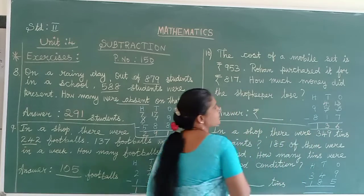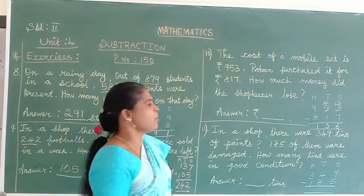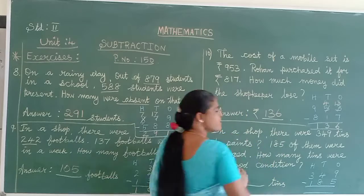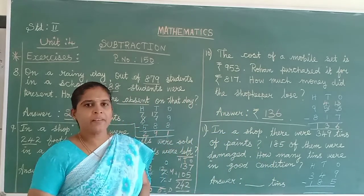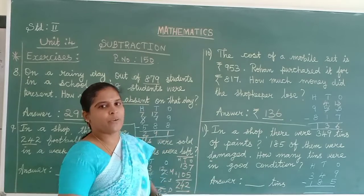So how much rupees did the shopkeeper lose or Rohan get as profit? Rupees 136. Understand? Just read the sum, understand the sum, then you can do it.